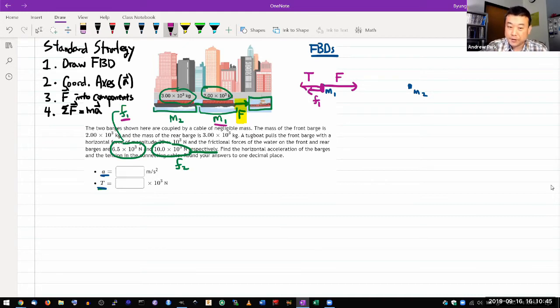Okay, let's move on to M2. Then there's the forward force of tension, pulling it forward. And then there's the friction, pulling it backward also.